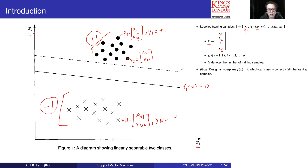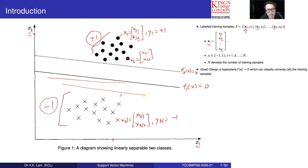We can construct many hyperplanes that separate these two classes. The question becomes which design is the best — that is what the SVM concept addresses. We have two options: f1(x) = 0 and f2(x) = 0, and we need to determine the optimal one.